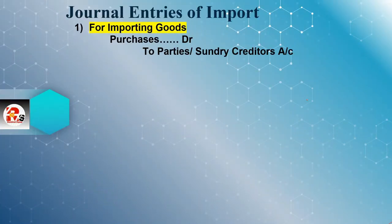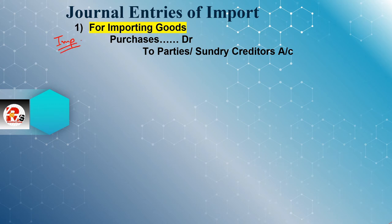So these are two important rules you have to remember. The general entries we have learned: the first general entry for export was parties account debit to export sales. For import, this is a very important entry — purchases account debit to parties account. If the parties account is not given, sundry creditors account will be used. Similarly, for export, sundry debtors account debit to export sales; for import, purchases account debit to parties account, or sundry creditors if not given.